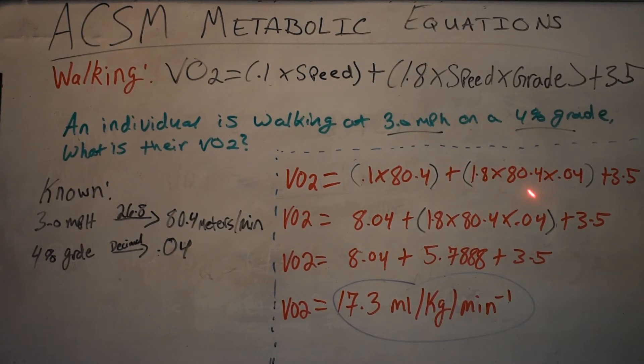Fill in the second part. Plus, remember always place our parentheses, plus 1.8 times 80.4 times 0.04. Remember the grade has to go in in a decimal, and then always remember your 3.5 after. That's the first step, just rewrite the equation with the proper numbers in the proper spaces.